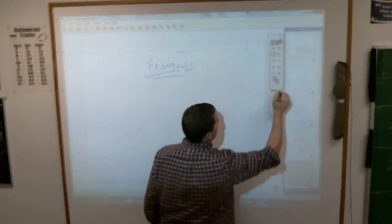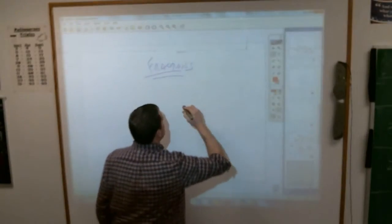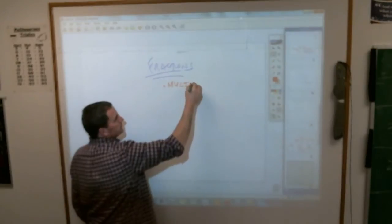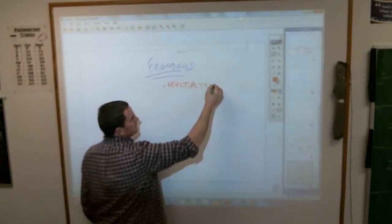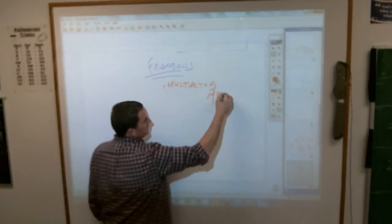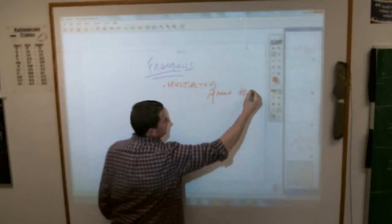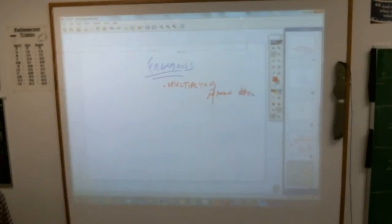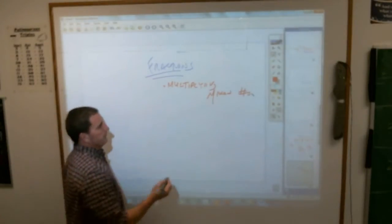This is multiplying mixed numbers. It's a pretty simple little process, like three steps.